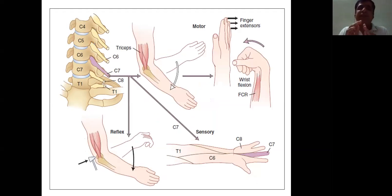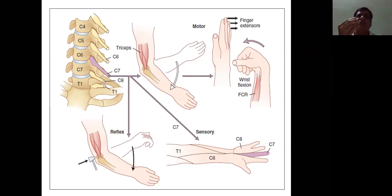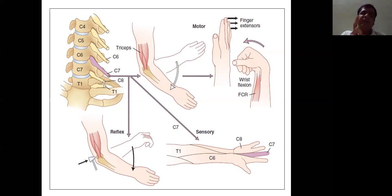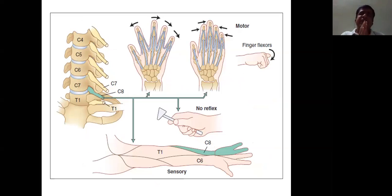For C6-C7 disc prolapse, the C7 nerve root is involved — this is the most common disc prolapse in the cervical spine. Motor testing includes triceps (elbow extension, a pro-gravity muscle — weakness is slightly difficult to elicit) and wrist flexion. Sensation is mainly along the middle finger. Reflex is the triceps reflex.